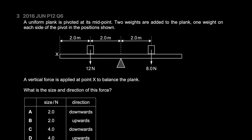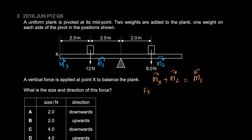Let's list the moments generated by each force: moment X, moment one, and moment two. Moment two is counterclockwise and moment one is clockwise. The equation is: MX plus M2 — both in the same direction — are balanced by M1. MX is the unknown force FX times the distance of 4 meters.